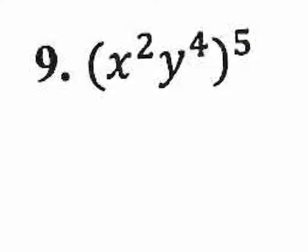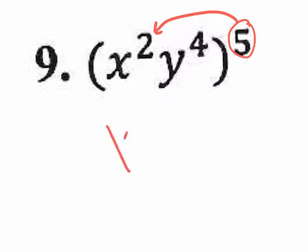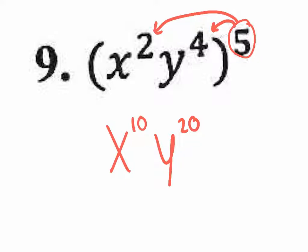Number 9: take that outside exponent and distribute it to each and every term. I'll draw arrows — 5 times 2 gives X to the tenth, and 5 times 4 gives Y to the twentieth. That's all for number 9.